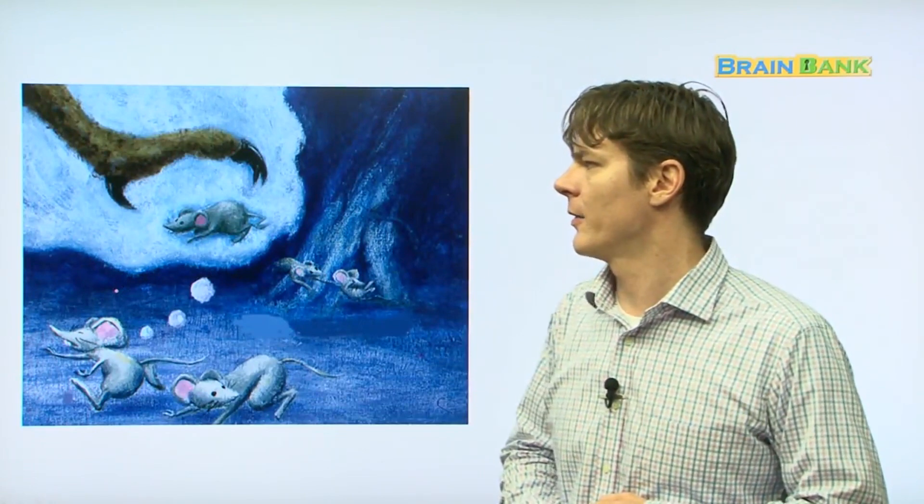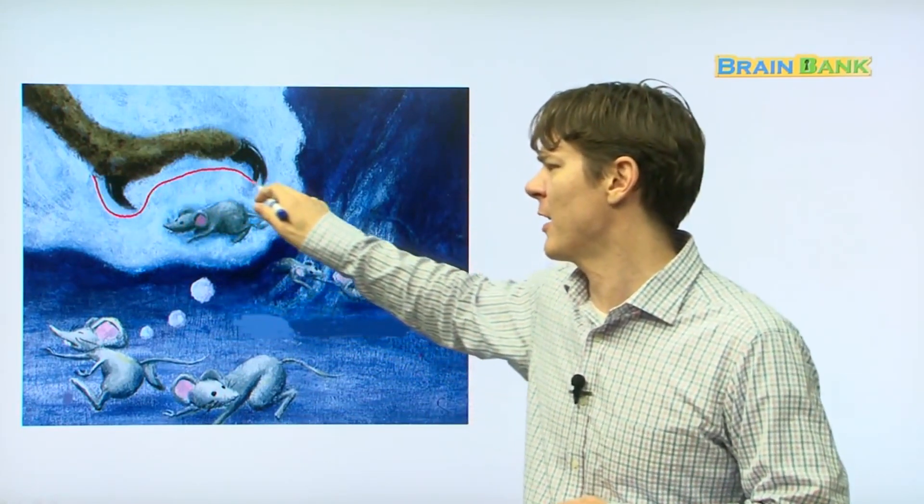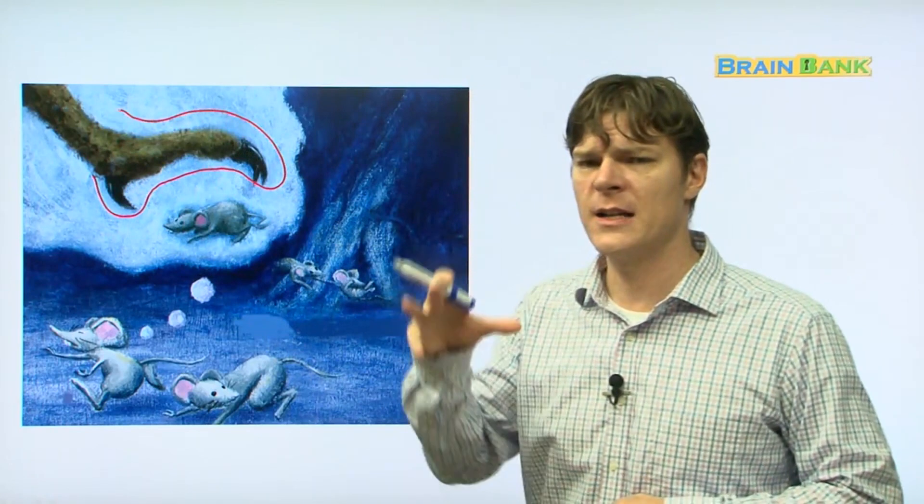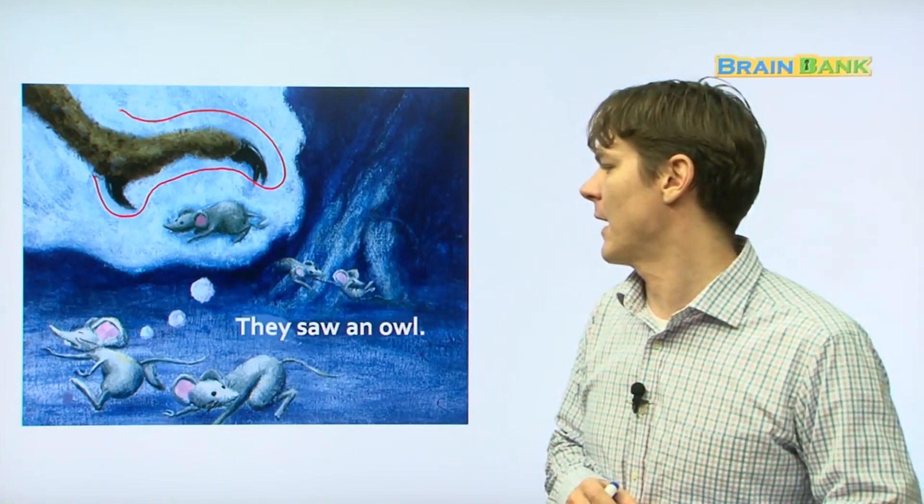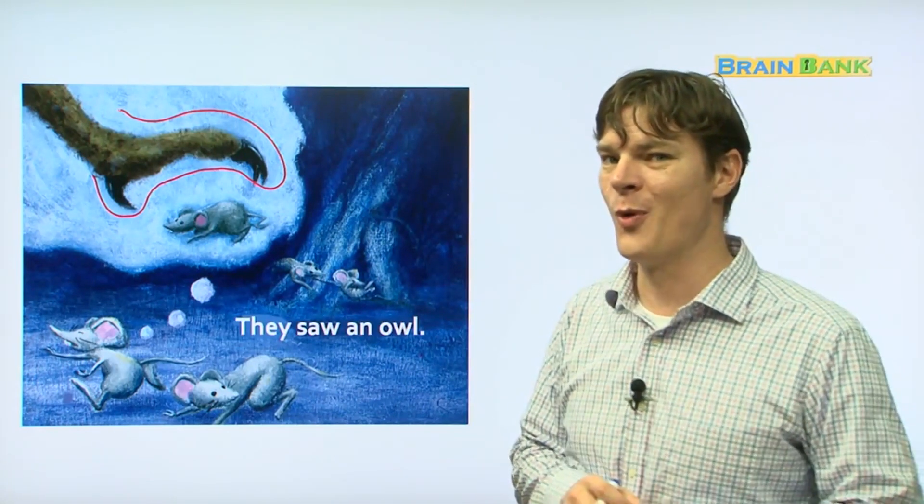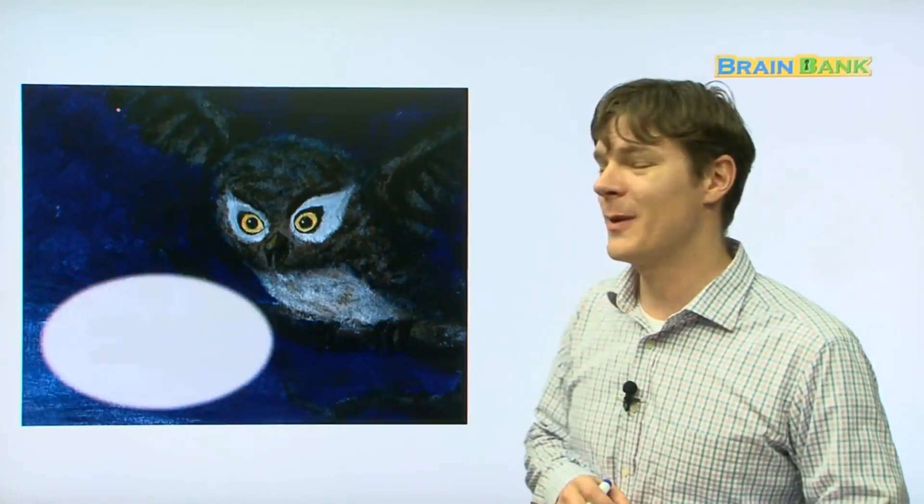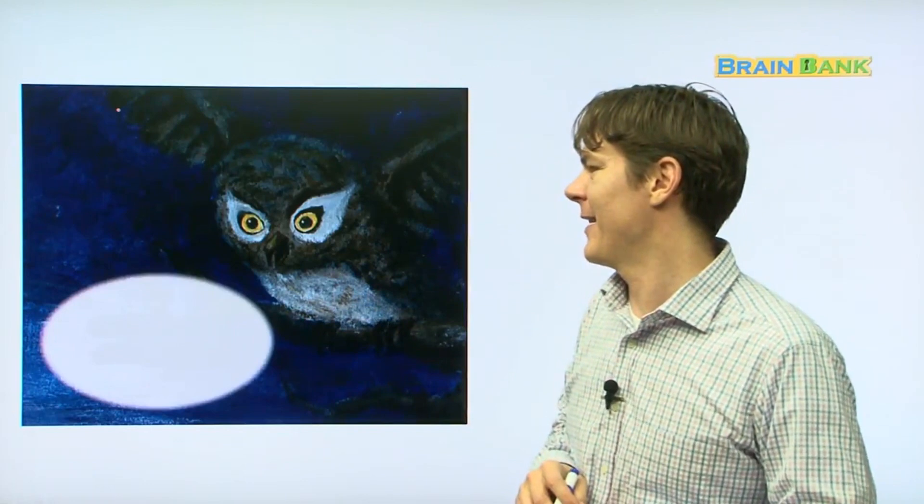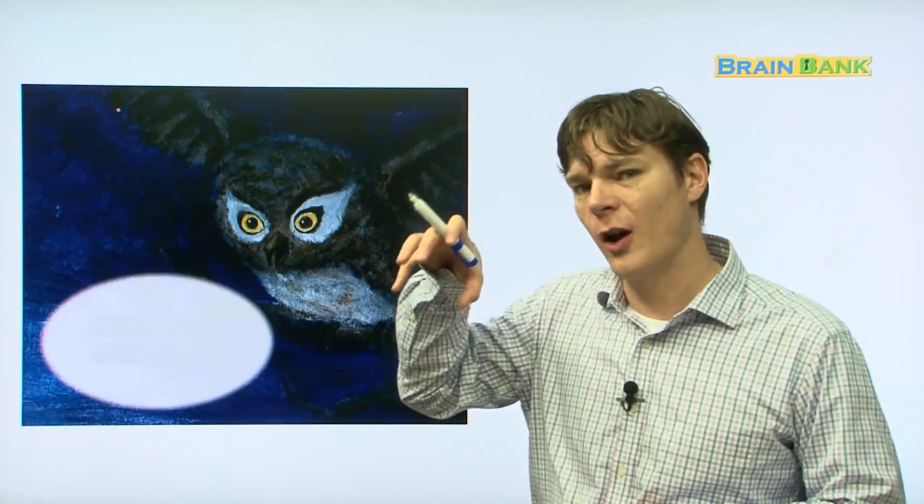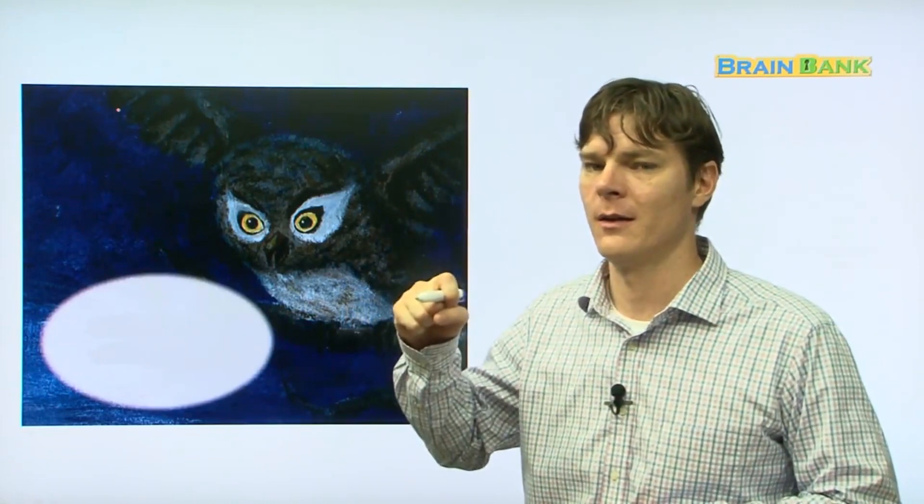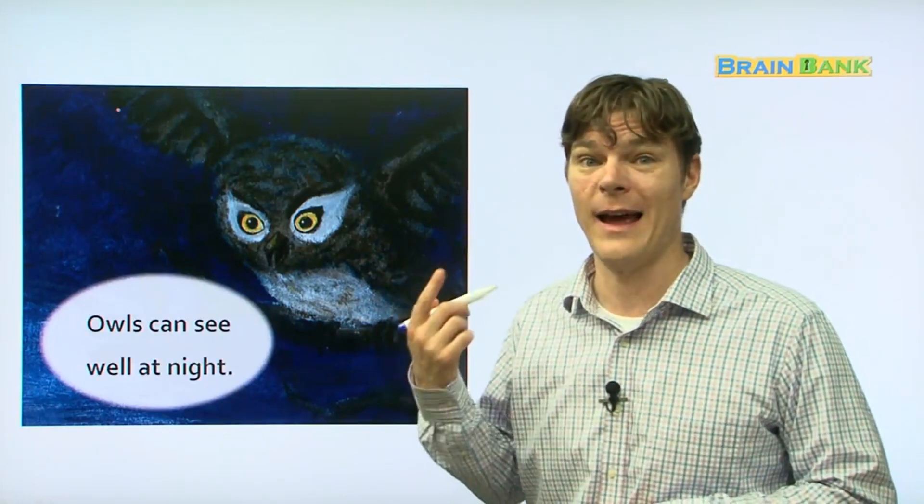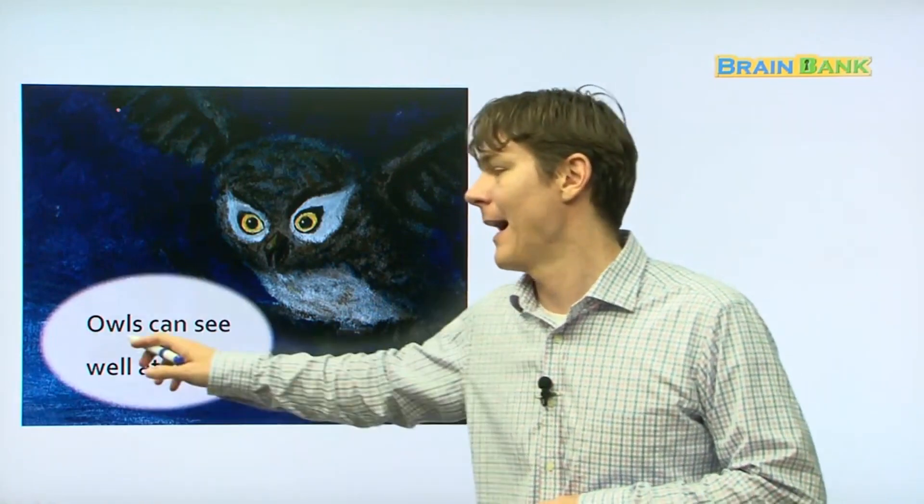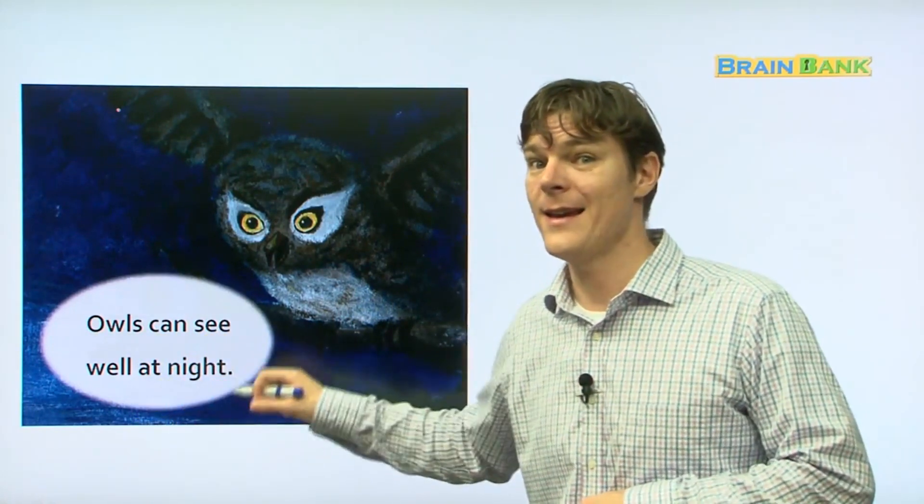Now, there they go. They keep going forward, and soon they see a big giant claw. A big giant claw from the sky is reaching down, and it's going to grab them. They saw an owl. Here he is. Here's the owl right here. And the owl, with his claws, can pick the mice up very well. Owls can see well at night.